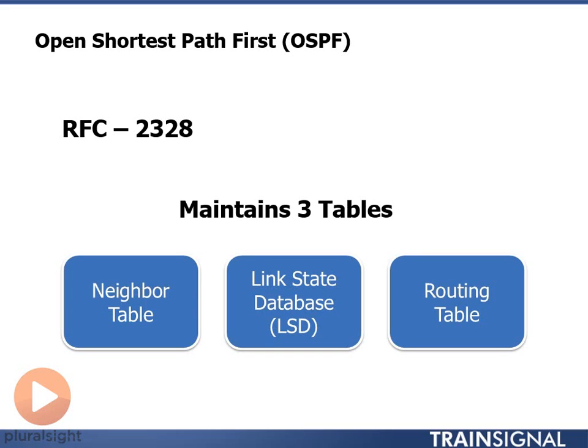We use the neighbor table to build relationships so that we can exchange information to build what's called the Link State Database, or LSD. This is built by propagating another type of packet called an LSA, or Link State Advertisement, which is propagated between neighbors. The LSAs contain information about the network links that routers know about — I have a graphic for this in a moment.